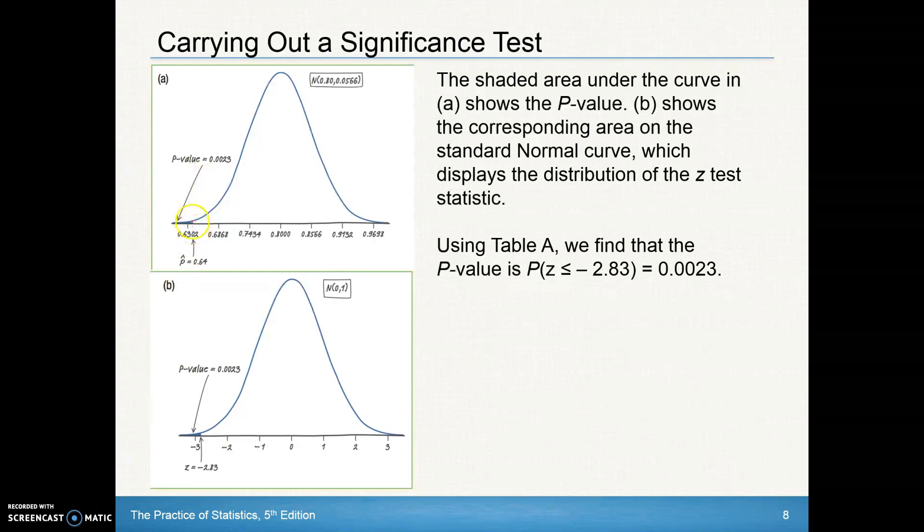So that's that shaded region that I was showing earlier. That right there, that little shaded region, if we look that up, if we look up that z-score, that z-score of negative 2.83, what we can do, if we look that up on the z-chart or the table A, we could find that that value is 0.0023. And that's a pretty darn small number. And the smaller that number is, the more evidence we have against the null hypothesis when using the p-value test.